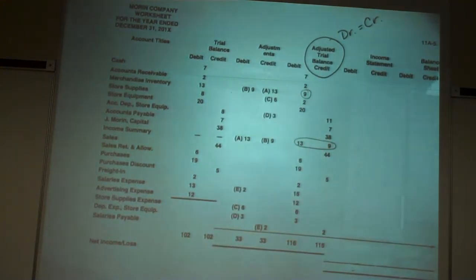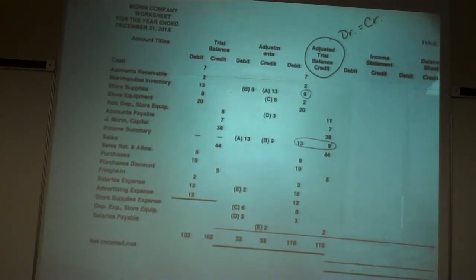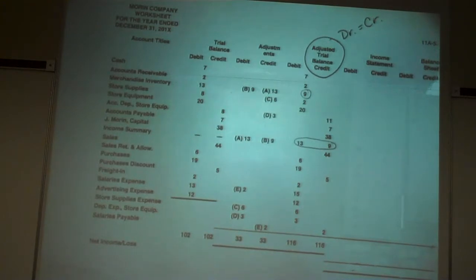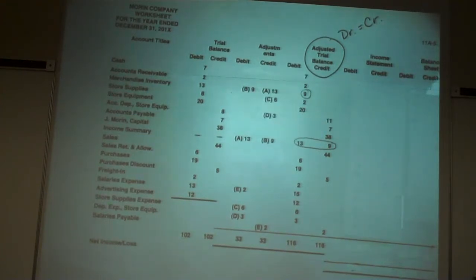From the adjusted trial balance, we carry it over to the income statement and to the balance sheet. What accounts go on the income statement? The mnemonic is: income, cost, and expense. Now we have some cost accounts. There are three of them: purchases, purchases discounts, and purchases returns and allowances. We also have freight in, if we have freight — that's also going to be carried over into that cost section.